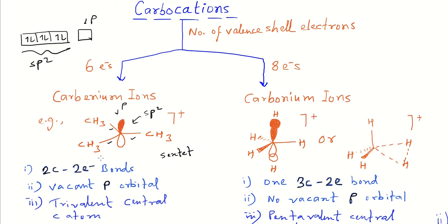All the bonds involved in carbenium ions are two-centered two-electron bonds. In a carbon-carbon single bond, two atoms are involved — each is one center — so it is a two-centered bond, and all covalent bonds are composed of two bonding electrons. The central carbon atom is trivalent, and the structure is trigonal.